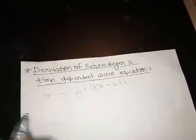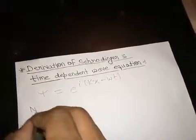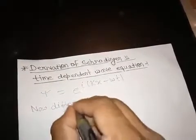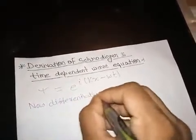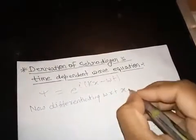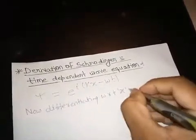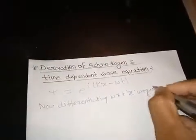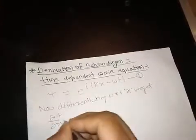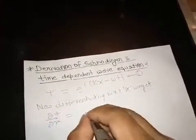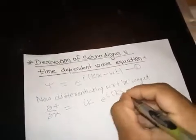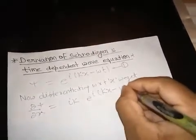Now differentiating with respect to x. Let this be equation number 1. ∂ψ/∂x equals ik e^(ikx - ωt). Let this be equation number 2.